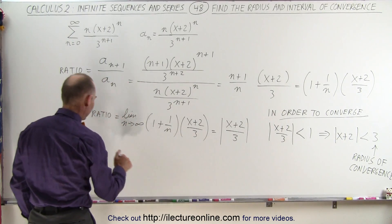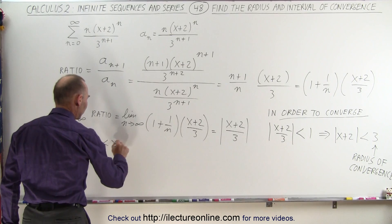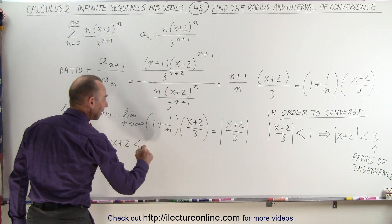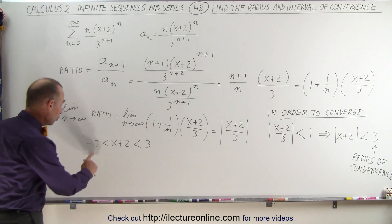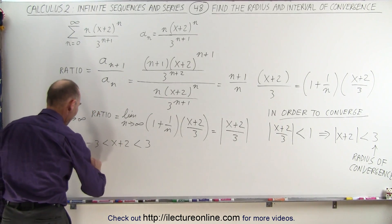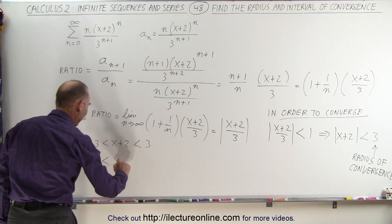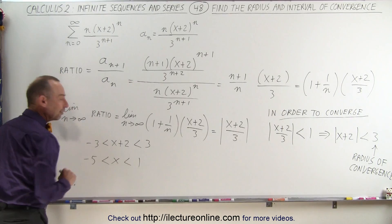And we can solve for x by saying that -3 must be less than x+2, which must be less than a positive 3. Now when we subtract 2 from the left side, the middle and the right side, we get -5 is less than x, which is less than 1. This here is the interval of convergence.